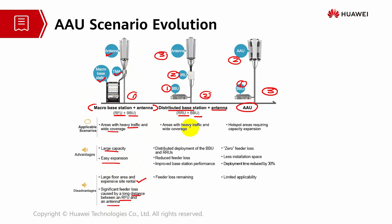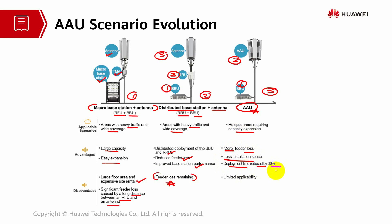Scenario two can be used at areas with heavy traffic and coverage. The advantage is that distributed deployment of BBU and RRU reduces feeder loss and improves base station performance. However, feeder loss remains a problem. In scenario three, using AAU, it can be deployed at hotspot areas requiring capacity expansion. Advantages are zero feeder loss, less installation space, and deployment time reduced by 30%. The only disadvantage is limited applicability.